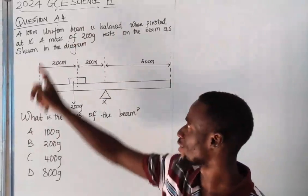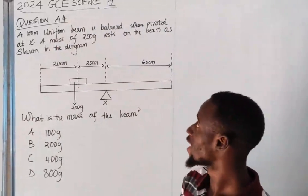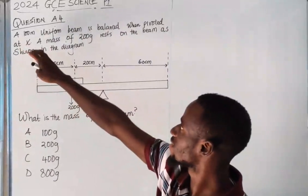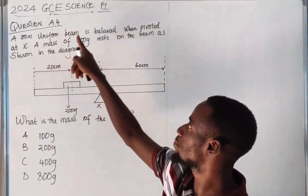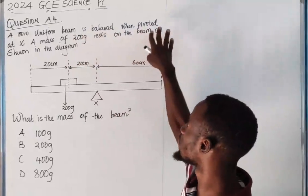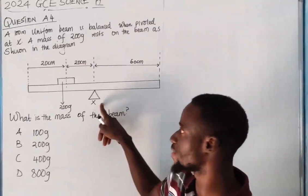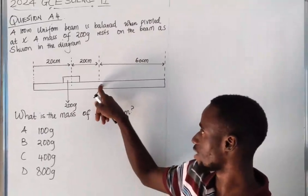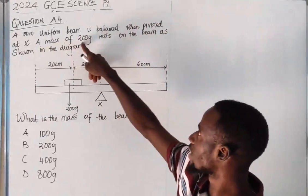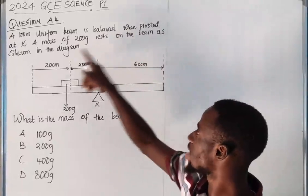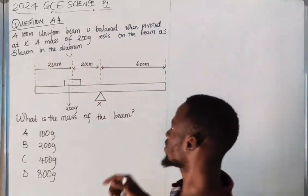Now the question says: a 100cm uniform beam is balanced when pivoted at X. So this is where it's being pivoted at, alright. A mass of 200 grams rests on the beam as shown in the diagram.